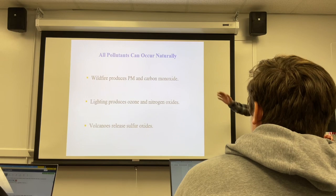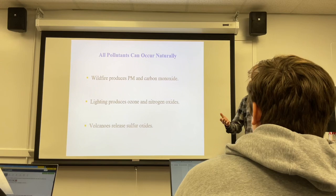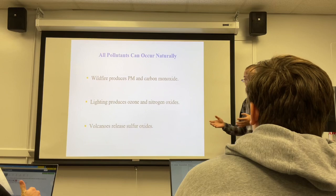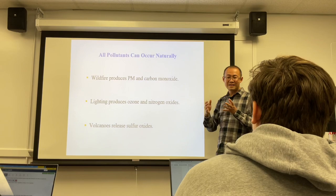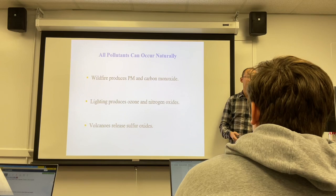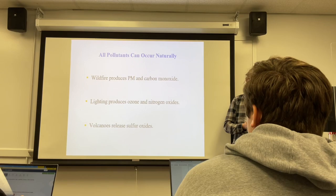Finally, we mentioned that 100% clean air is not attainable not only because of human activity, but also because of natural events. These natural events also produce bad gases. For example, wildfire naturally produces PM and carbon monoxide from burning trees and wood. Lightning provides high energy that promotes the reaction of oxygen and nitrogen in the air, producing nitrogen oxides and also ozone — the same reason a Xerox machine produces ozone via its laser light.